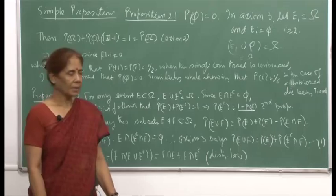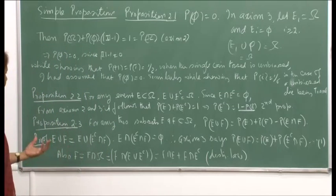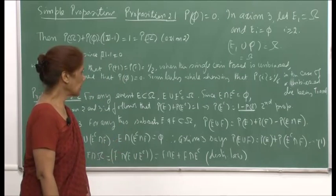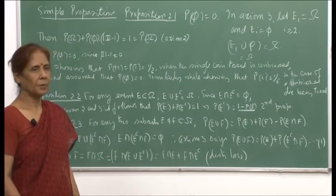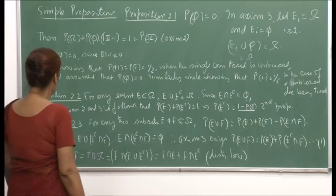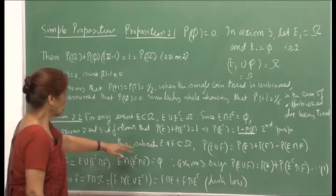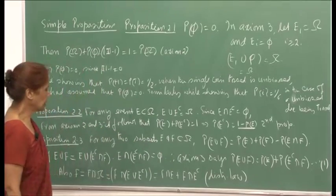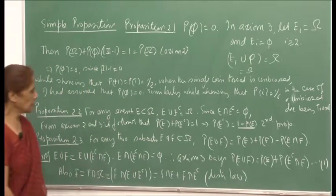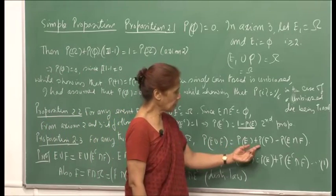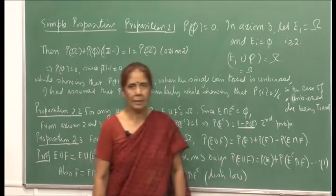That is the second proposition. Now using the basic three axioms, I have arrived at P(∅) = 0 and P(Eᶜ) = 1 − P(E). Proposition 2.3 says that the results are getting more complex: if E and F are subsets of Ω, then P(E ∪ F) = P(E) + P(F) − P(E ∩ F).